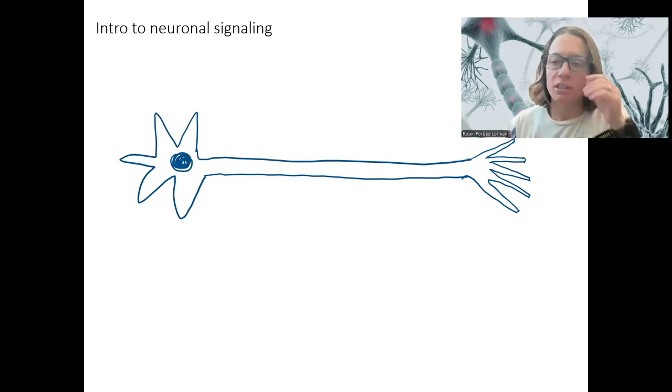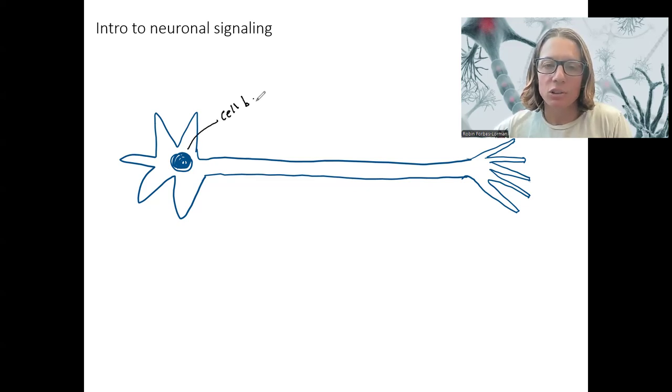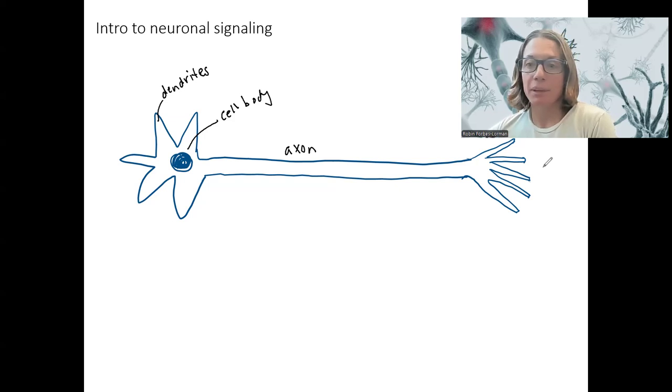So here's a neuron. It's a multipolar neuron is what we'll use as our example. You know that this is the cell body, also called the soma, and that has dendrites that come off of it, and those are going to receive incoming signals from somewhere else. The axon is a long projection that travels somewhere else to contact something else.